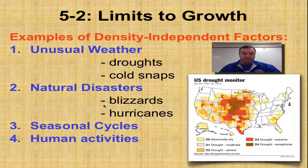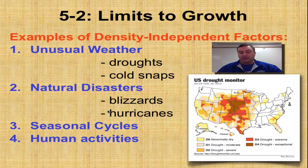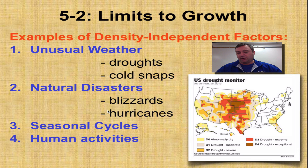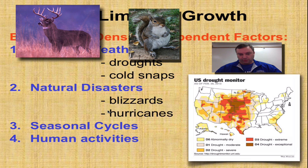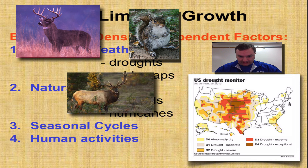Other natural disasters include blizzards and hurricanes. A hurricane can be extremely destructive to an environment, and of course blizzards — with feet of snow and a very cold snap — can also knock down your population, say deer, squirrels, elk if you're out in the Rockies, et cetera.